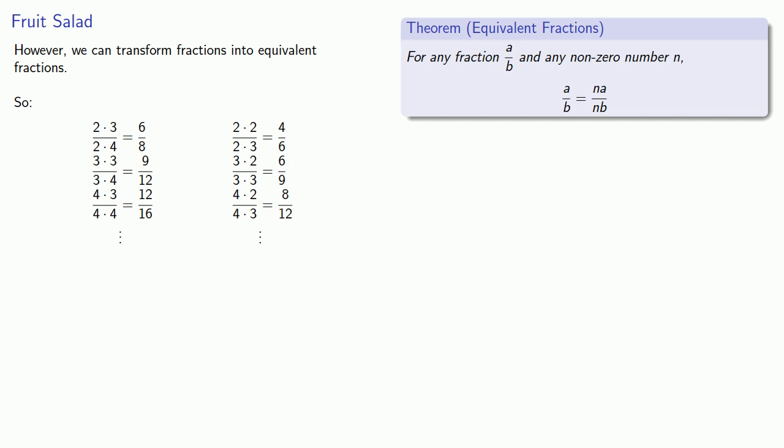So if we look at our possibilities, we see that 3 fourths is the same as 9 twelfths, and 2 thirds is the same as 8 twelfths. And because they have the same denominator, we can add the numerators and get our sum, 17 twelfths.